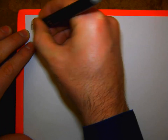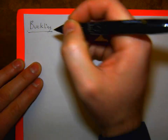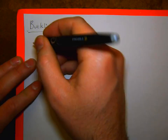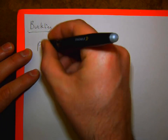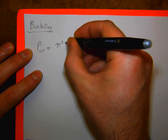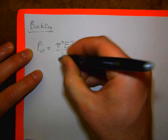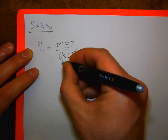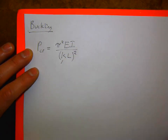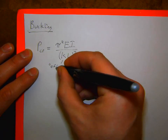Moving on to buckling. There are essentially two equations to know. The critical load for buckling is P_cr = π²EI/(KL)², where K is a constant due to boundary conditions — the effective length factor.